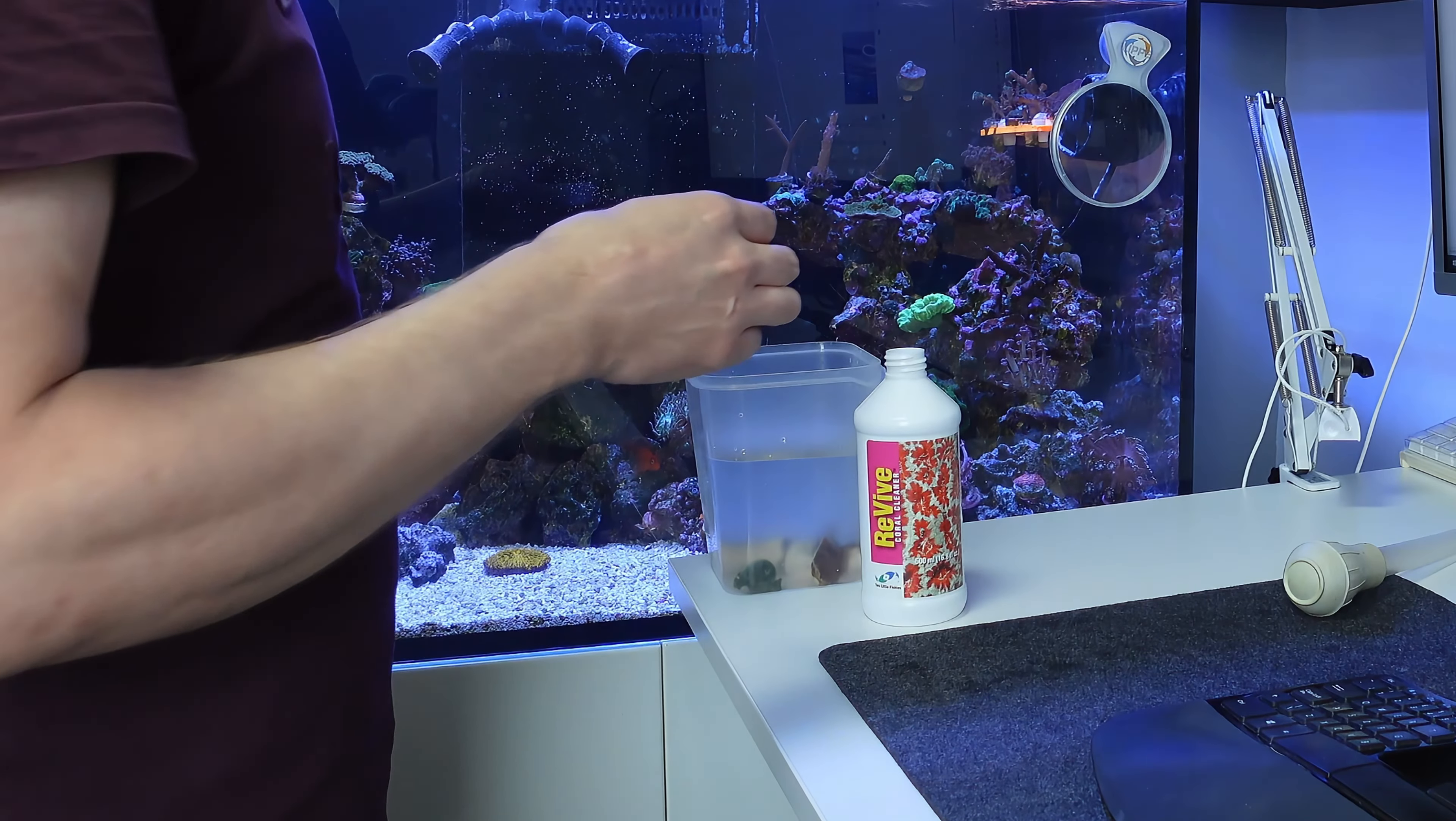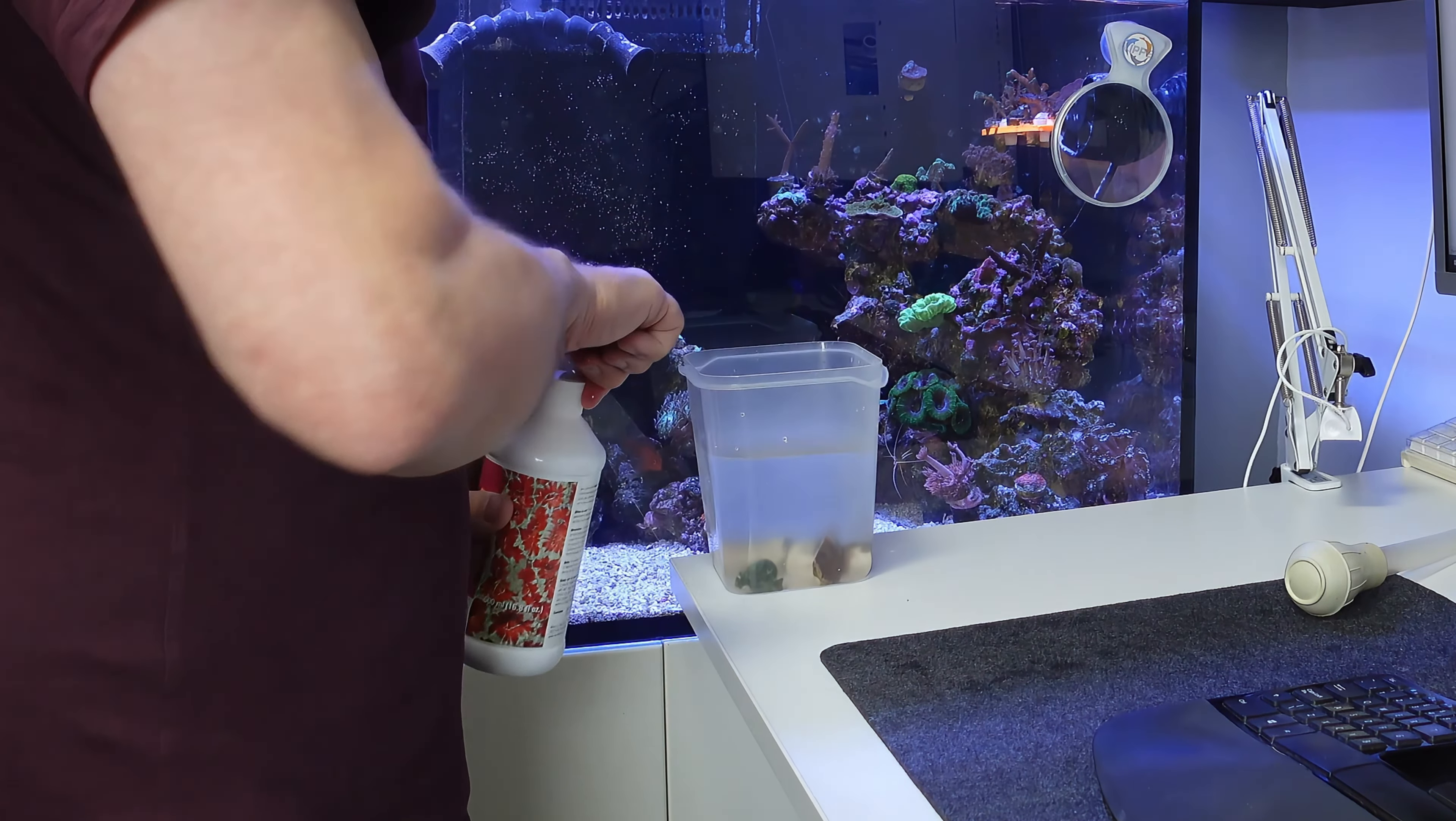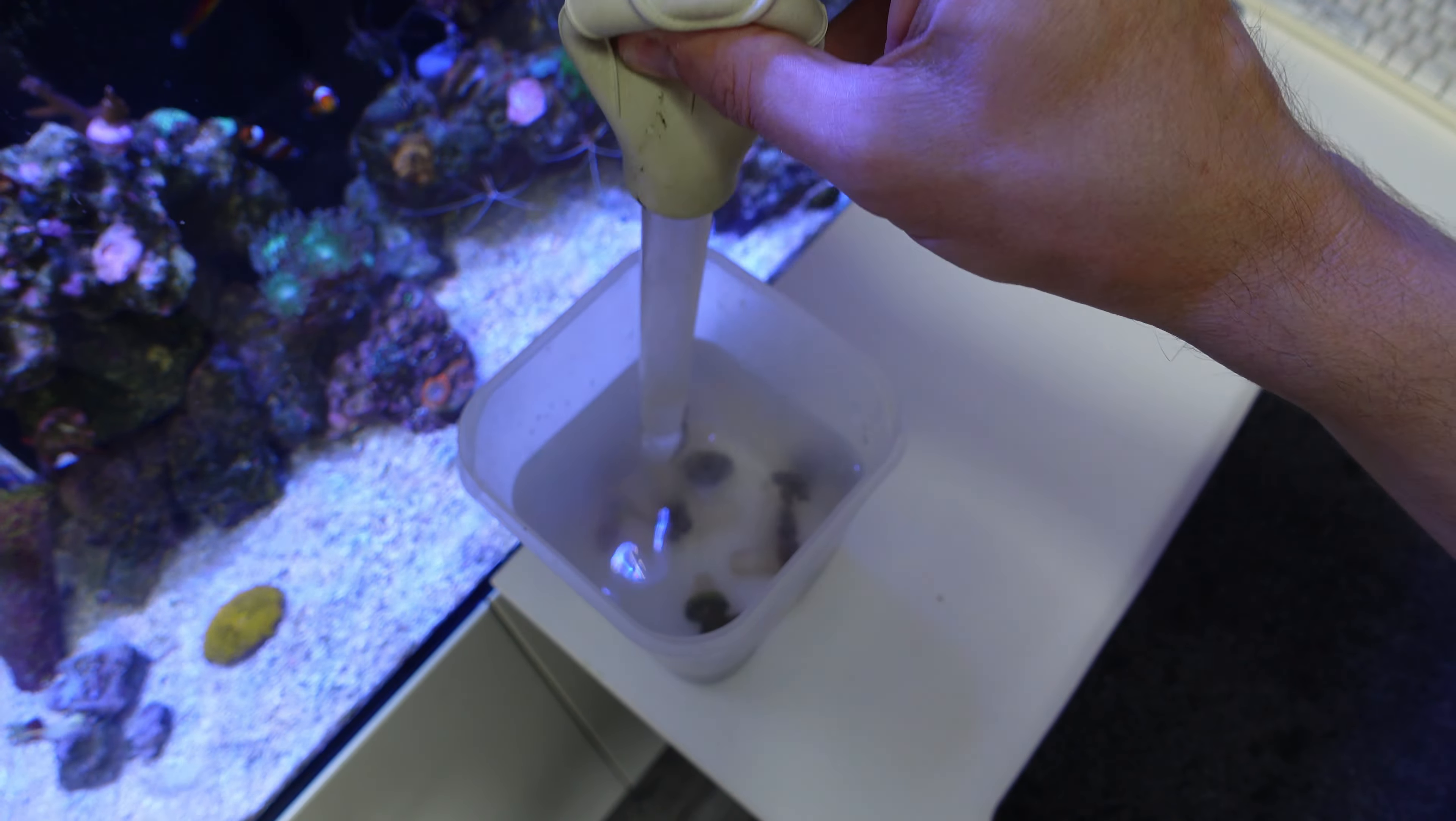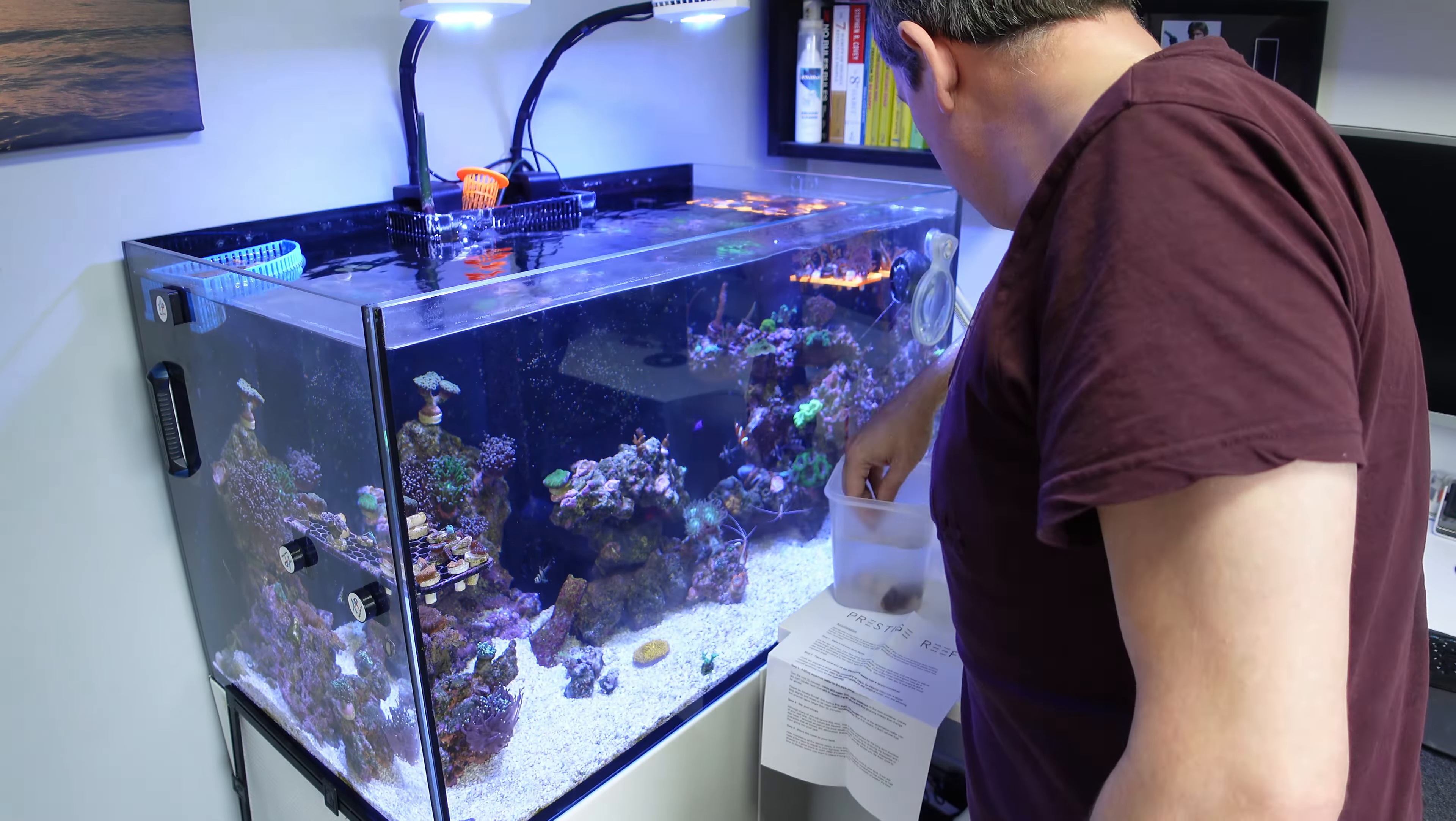With the acclimation in this pot, I added some of my tank water as I said, and then a capful of the Two Little Fishies Revive dip mix. Mixed that all around, agitated it with the turkey baster just to kind of flush through everywhere, and left that in for eight minutes.